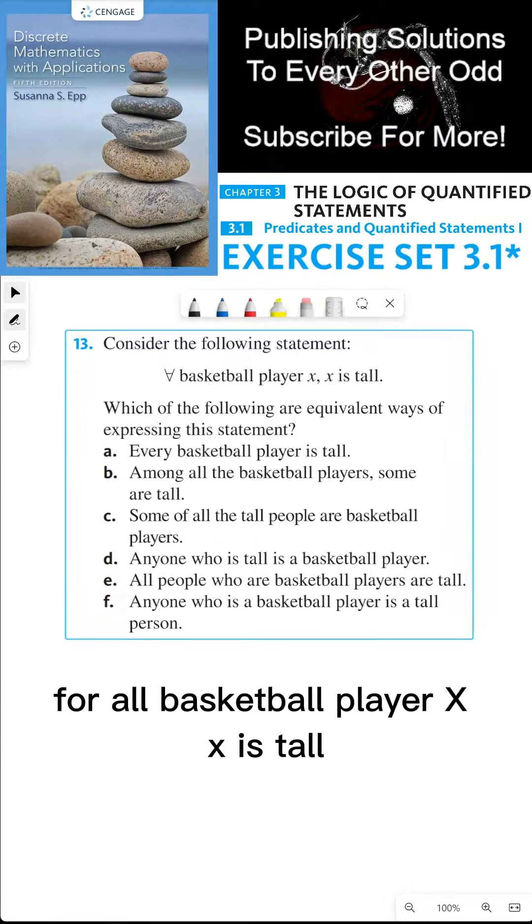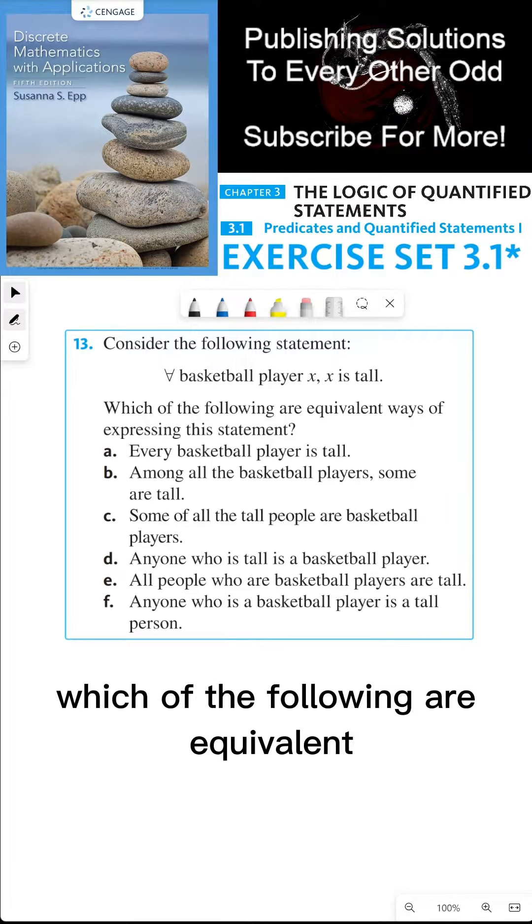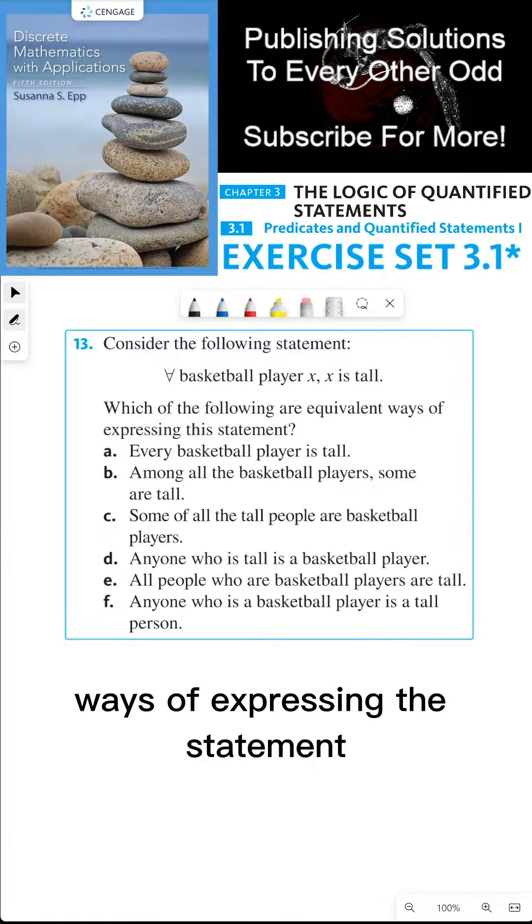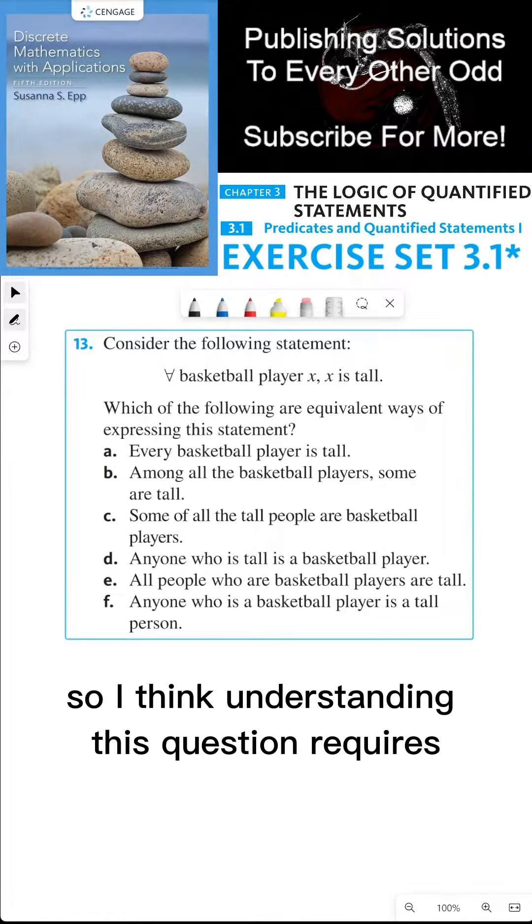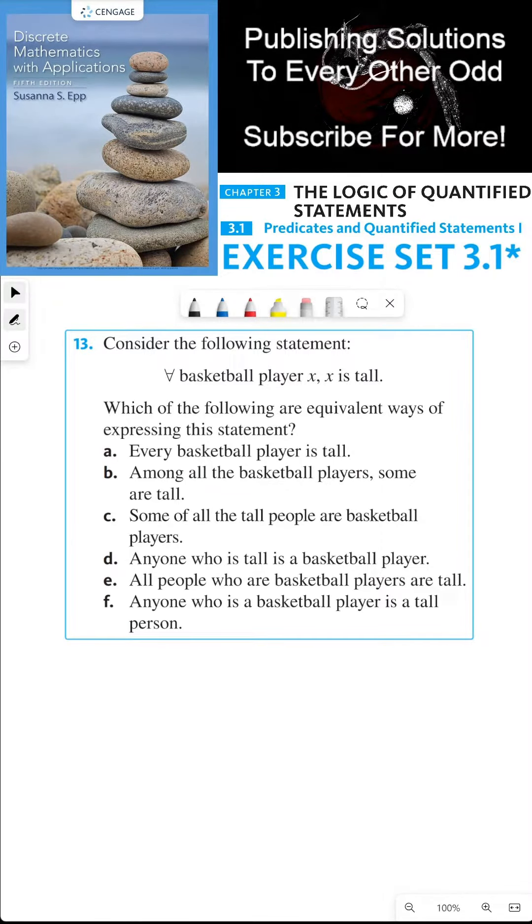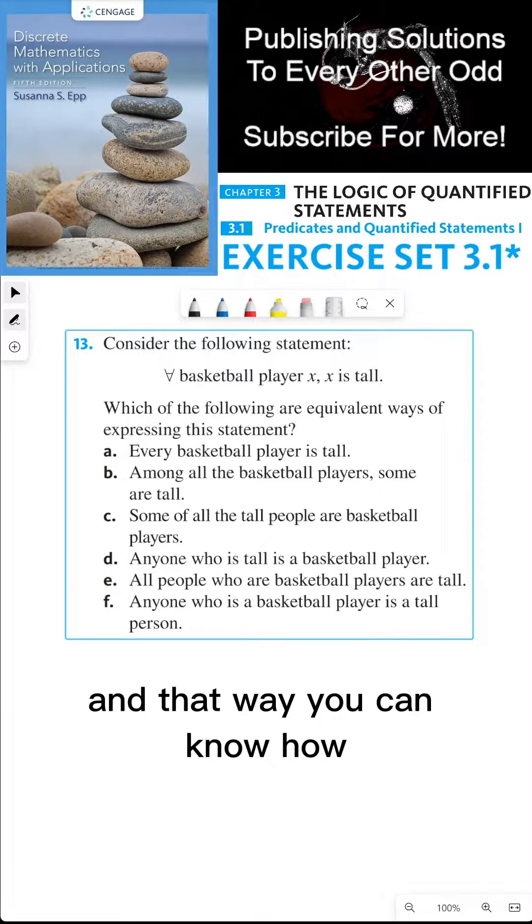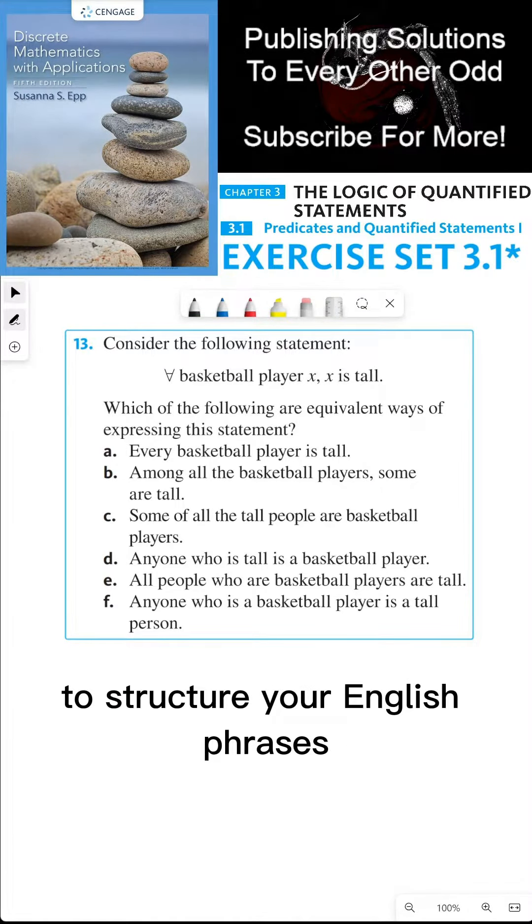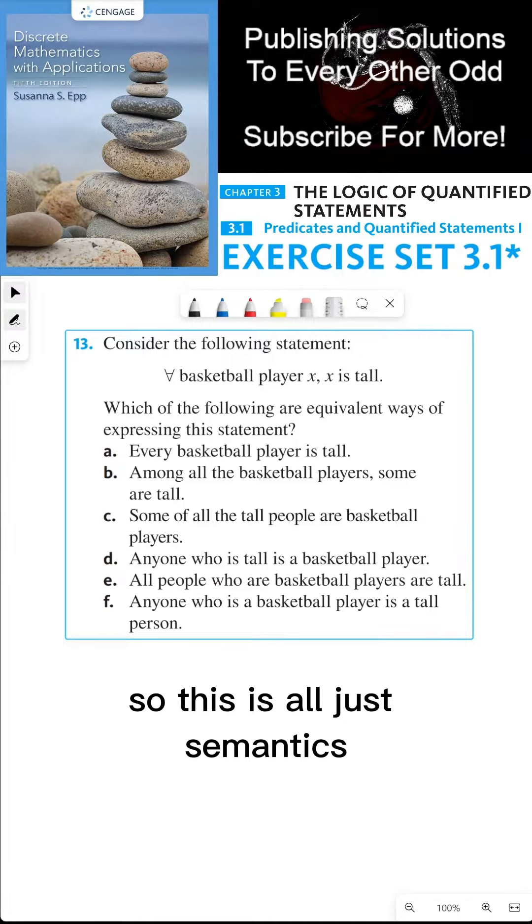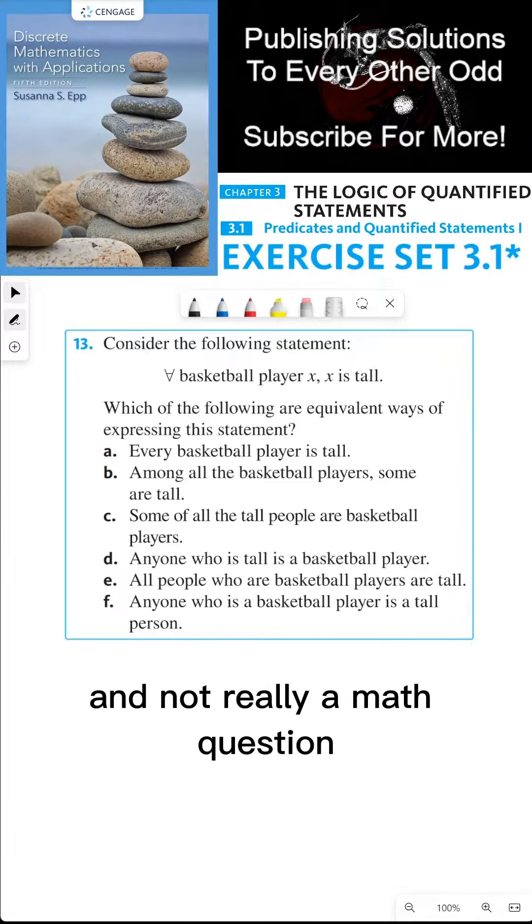Consider the following statement. For all basketball player x, x is tall. Which of the following are equivalent ways of expressing the statement? I think understanding this question requires you to see the answer first and that way you can know how to structure your English phrases. So this is all just semantics and not really a math question.